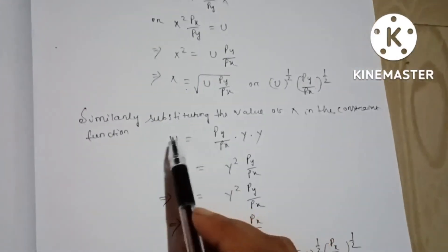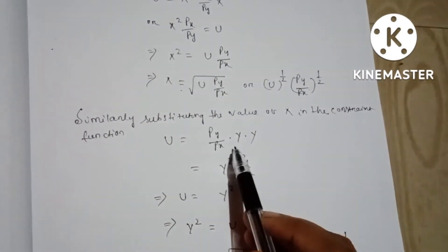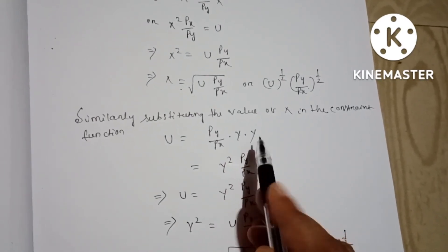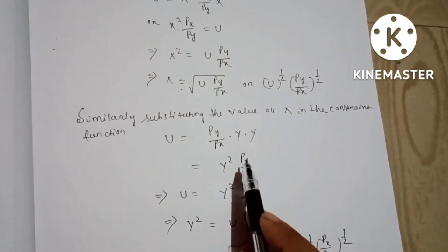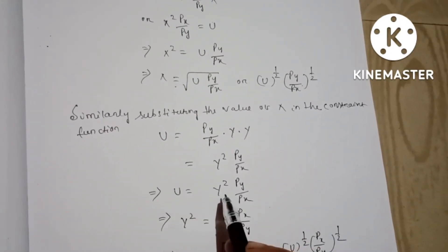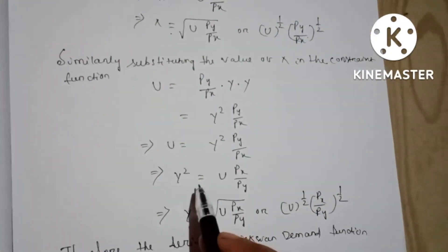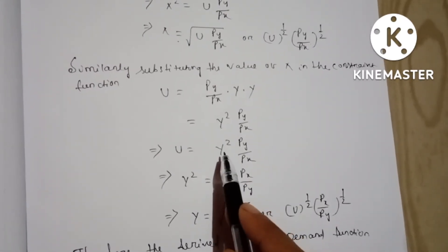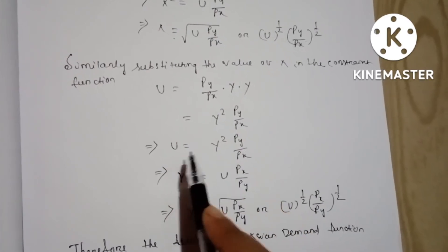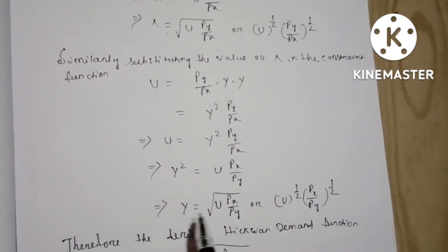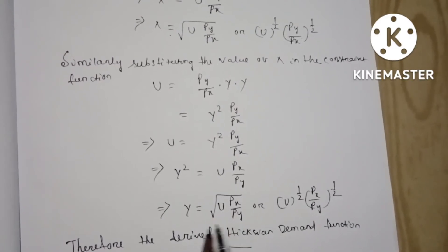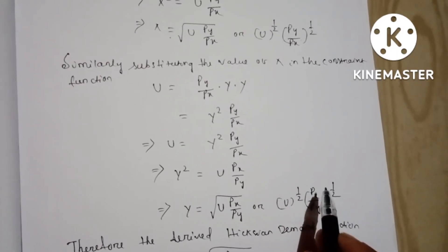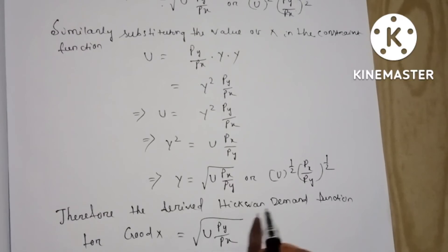Similarly, substituting the value of X into the utility function, we get U equal to (PY/PX)·Y·Y, so Y² times (PY/PX) equal to U. Therefore Y² equal to U·(PX/PY), and Y equal to U^(1/2) times (PX/PY)^(1/2).